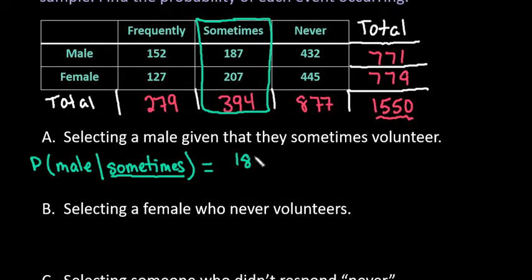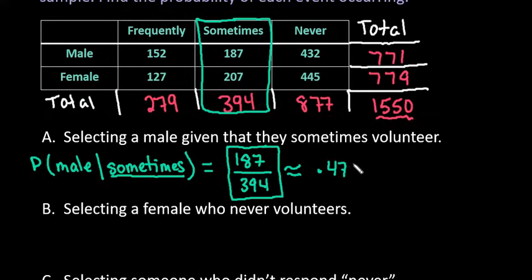So we would have 187 over 394. Now it is perfectly acceptable in probabilities to leave your answer as a fraction, or you could take into your calculator and do 187 divided by 394 and get 0.4746, or you could say 47.46%. All three of those are acceptable ways of writing your answer.